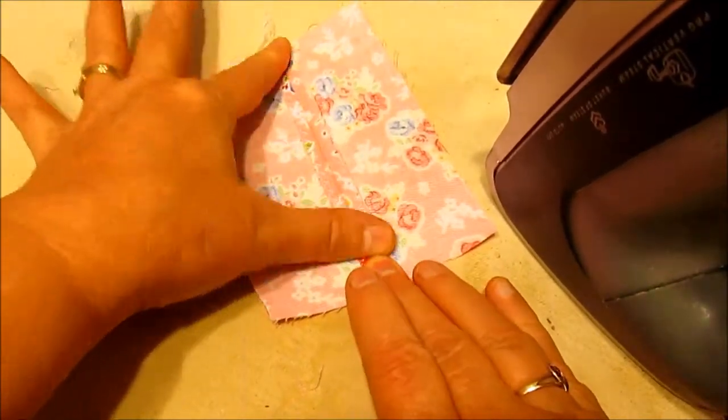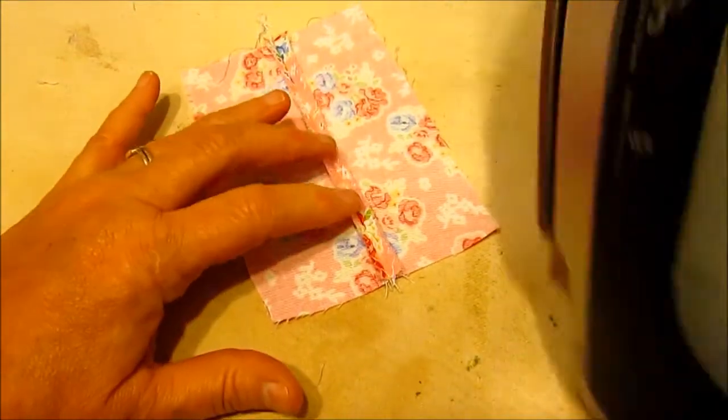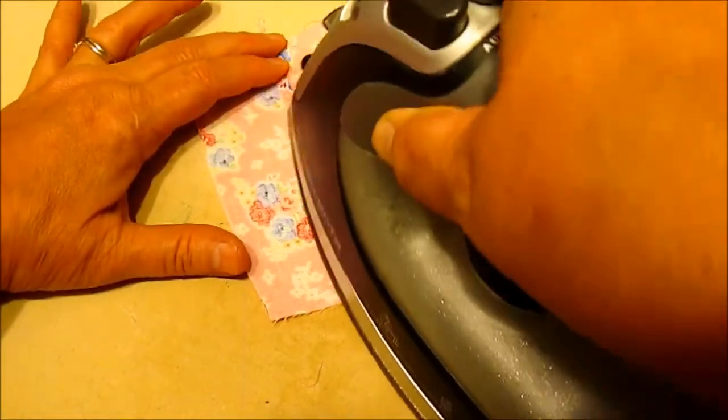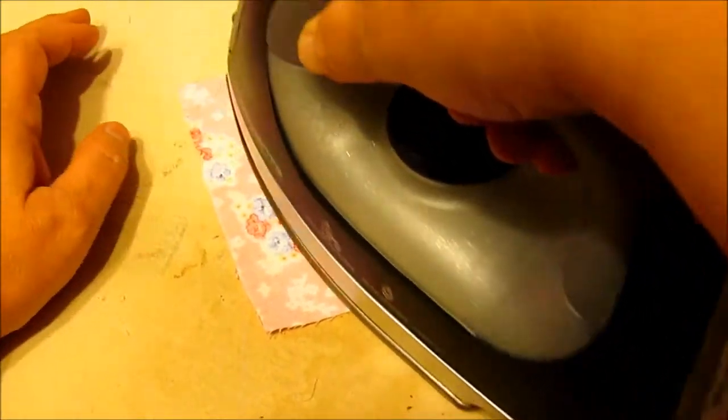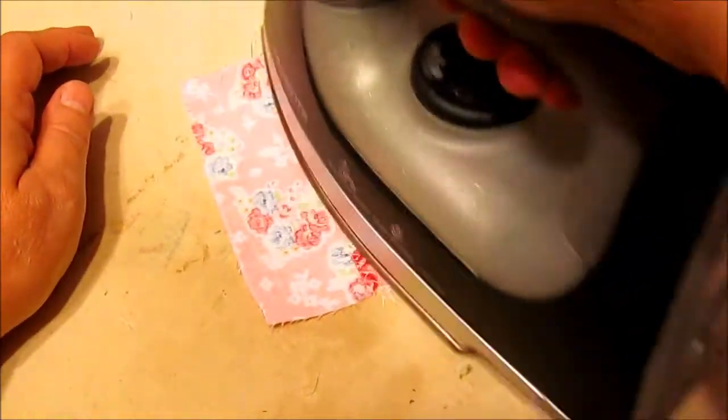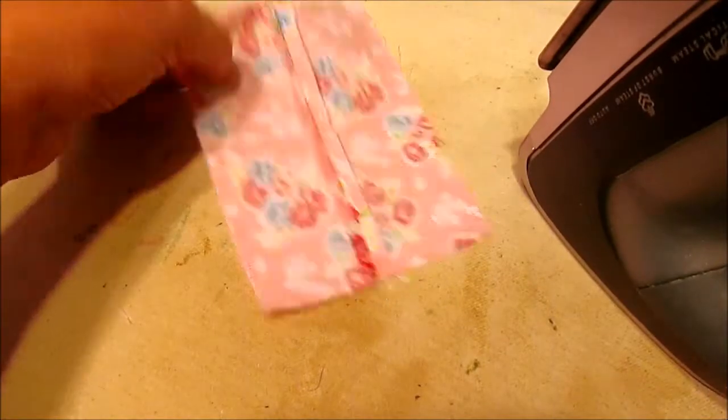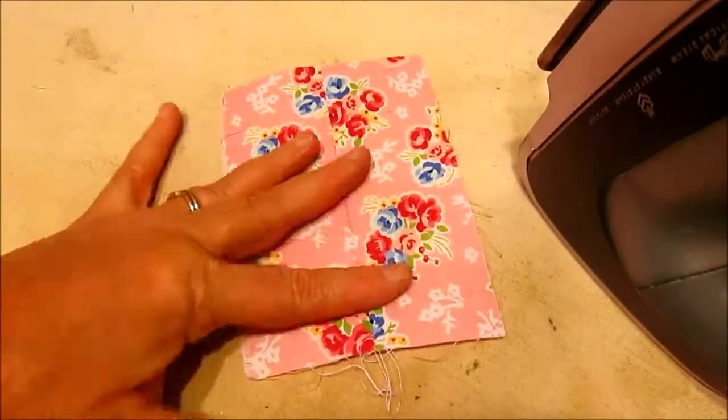So now I've opened it up. I'm going to kind of finger press that seam open just a little bit, and then I'm going to take my iron and go up kind of wiggling it back and forth, pressing it flat. Shoot it with a little steam.